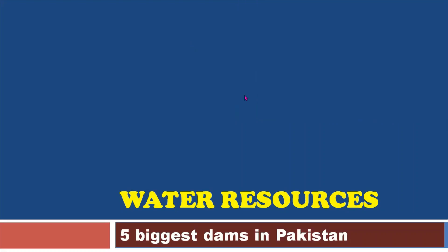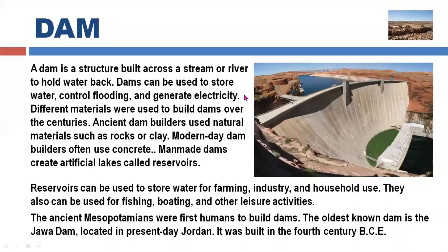A dam is a structure built across a stream or river to hold water back. It is a structure where you can hold, stop, and store water. Dams can be used to store water, control flooding, and generate electricity. These are the three major objectives: storage of water, controlling flooding, and generating electricity.